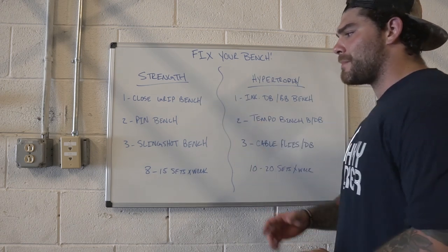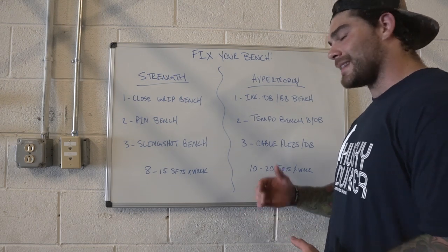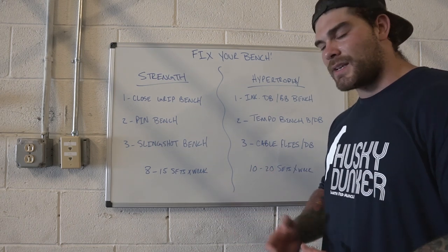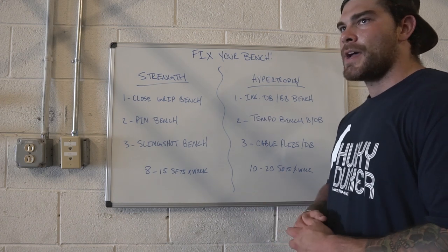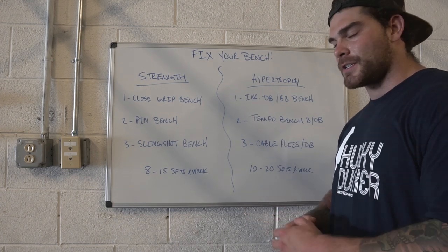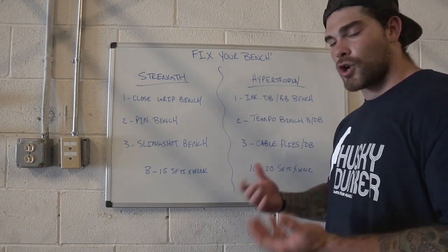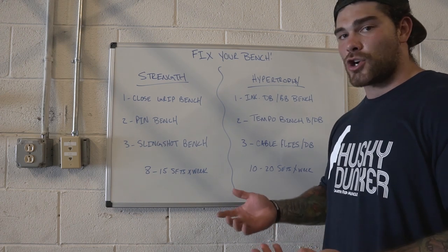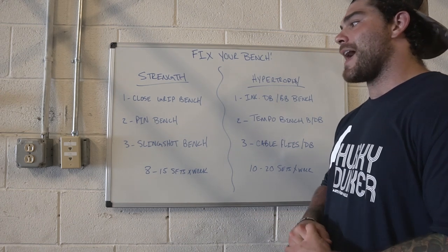For strength, my three favorite movements — total volume per week is eight to 15 sets, with a rep range of about five to eight reps. The first is close grip bench press, especially for strongman where strong triceps carry over to overhead events, and for powerlifting where you want a strong lockout. Number two is pin bench, which helps focus on weak points since you can set the pins wherever you're having an issue. It also helps with bar path and technique. If you don't have pins, floor pressing is a cool alternative.